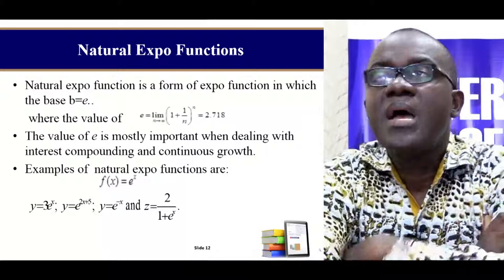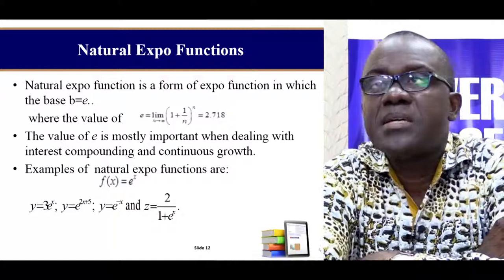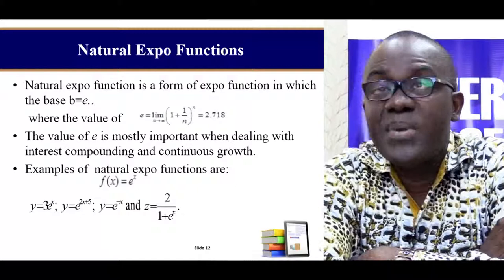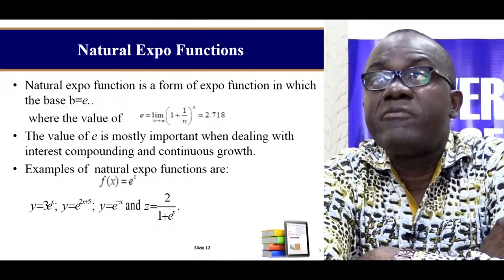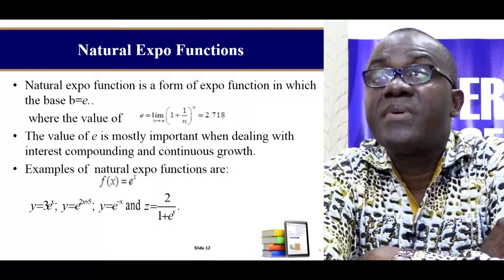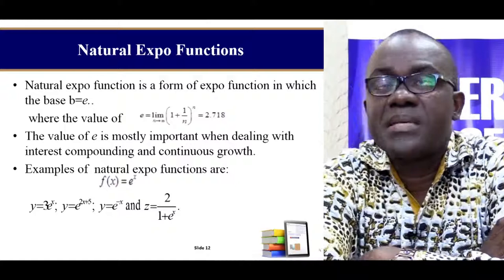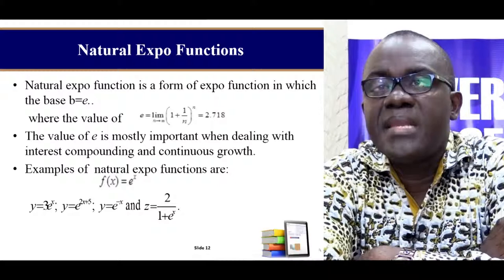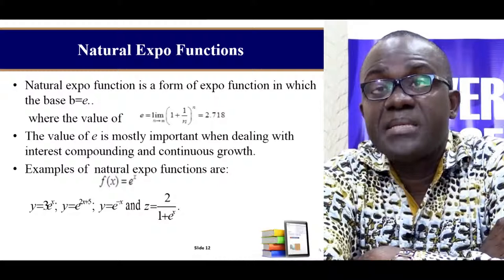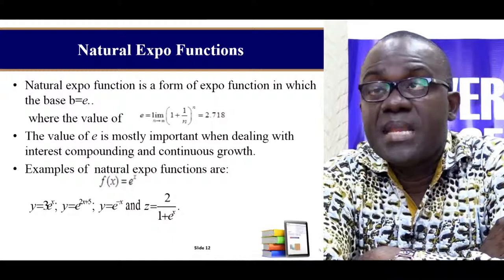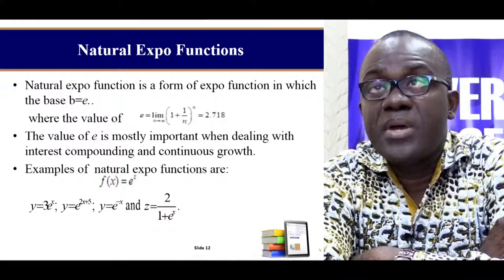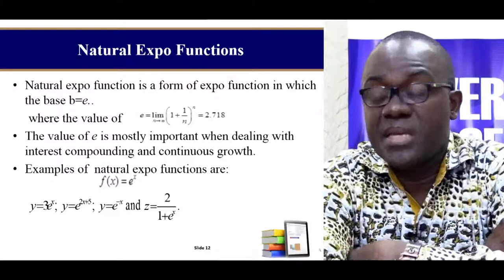I also need to talk about what we call natural exponential functions. Notice this value e — when you take the limit as n approaches infinity of the function (1 plus 1 over n) raised to the power n, you get the value e, which is approximately 2.718. When any exponential function has e as its base instead of b, we call it a natural exponential function. This e value has very important economic implications which you will come to know later.